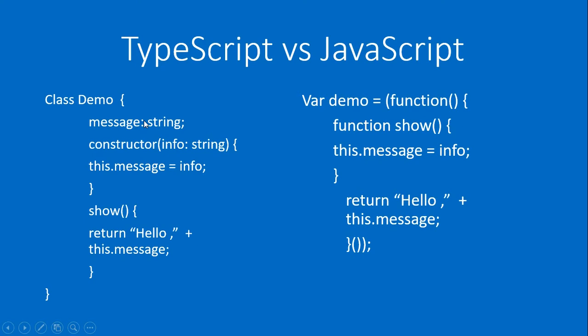Inside the class, I am creating a constructor with a parameter called 'info' of type string, and storing that information in 'this.message'. Then I am calling a function called 'show' and returning 'hello' plus 'this.message'. This is how you write your code in TypeScript.